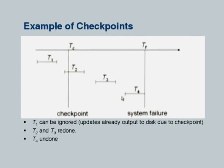Redo actions go forward from the last checkpoint record. Undo actions may have to go older, because transactions active at the time of the checkpoint may have to be rolled back, requiring earlier log records. For redo, you never have to go before the checkpoint. Any part of the log prior to the start of the oldest active transaction at checkpoint time is no longer needed for redo or undo and can be garbage collected.